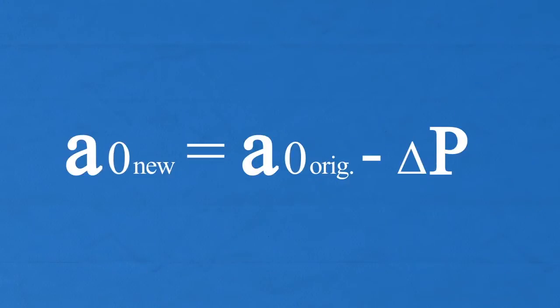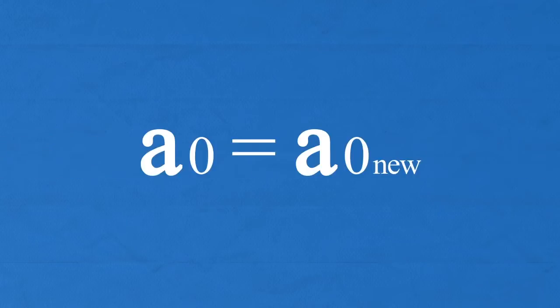Using this difference, and considering the sign, calculate a new coefficient — a zero new — for a given material. Based on the calibration results, put the new value, a zero new, instead of the set coefficient a zero, in the selected menu, Asphalt 2.